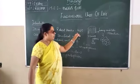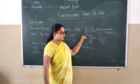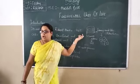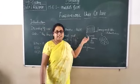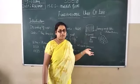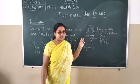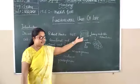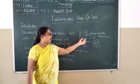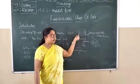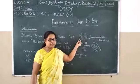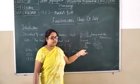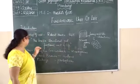Later, Robert Hooke observed these structures using the green bar — the wooden part of a plant, also known as cork. In those structures, he observed and named each part as a cell.